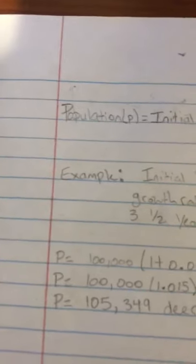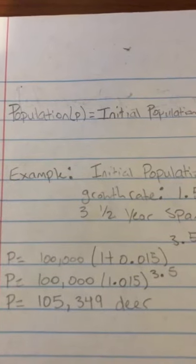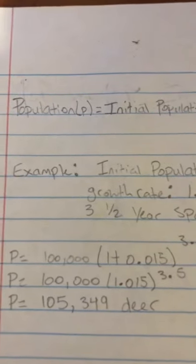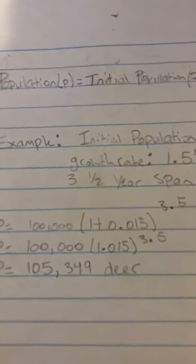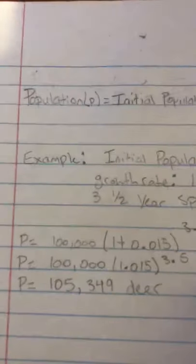Then you condense it to P equals 100,000 times 1.015, because you have to convert the percentage to a decimal. That gives you 1.015 to the 3.5 power.